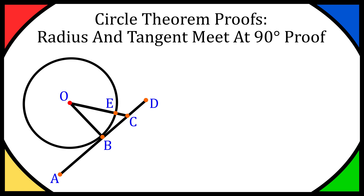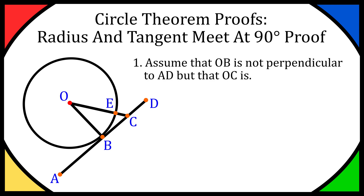We're proving that line AD, when it meets the circle, the radius OB is going to be at 90 degrees. We can't assume that yet — that's what we're going to prove. So firstly, let's assume that OB is NOT perpendicular to AD. We know it's going to be OB at a right angle to AD, but let's assume it isn't, and instead assume that OC is the perpendicular line. Obviously from the visual it isn't, but let's assume it is.